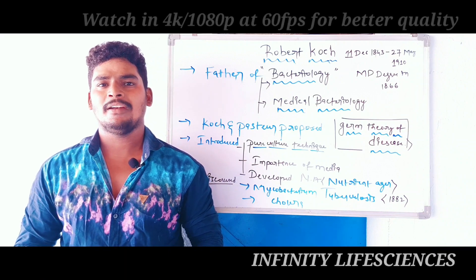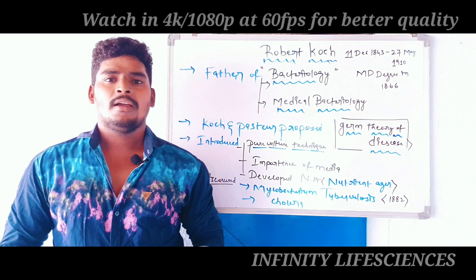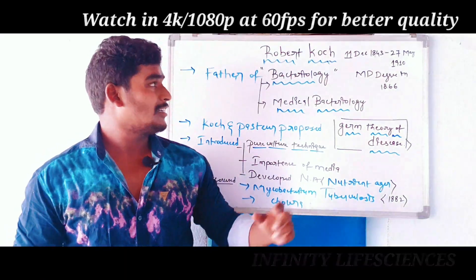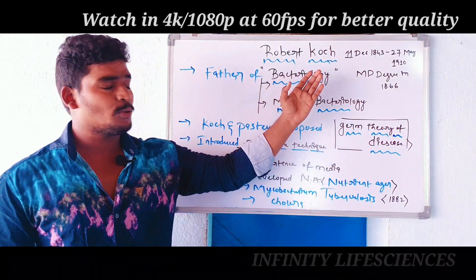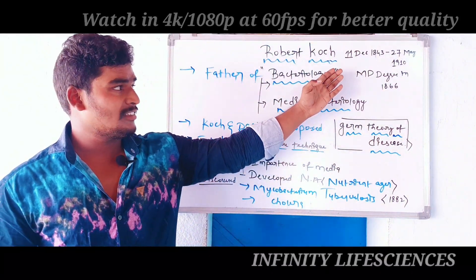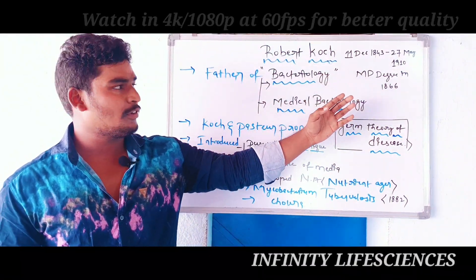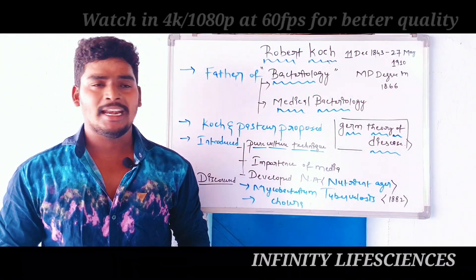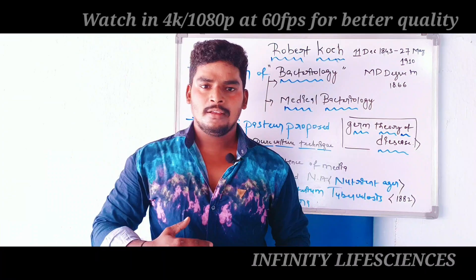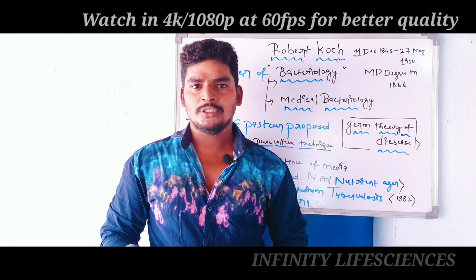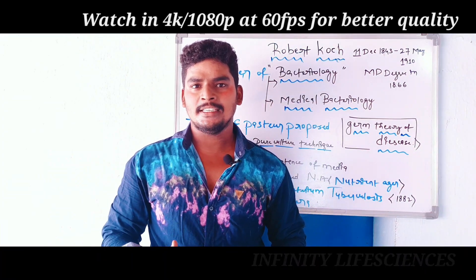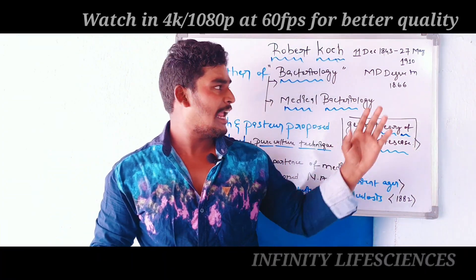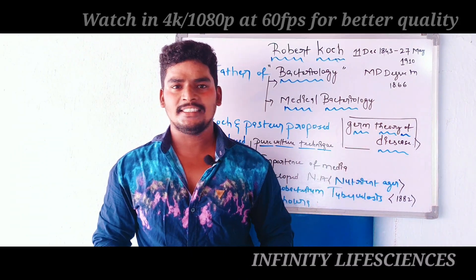He is Heinrich Hermann Robert Koch. Robert Koch's life period is 11th December 1843 to 27th May 1910. Robert Koch studied medicine and got his MD degree in 1866.